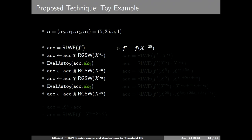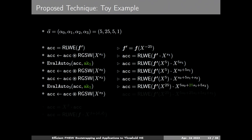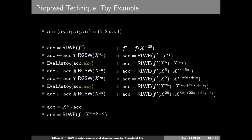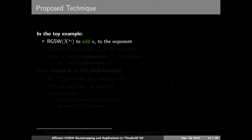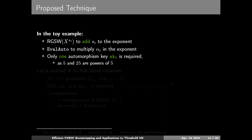Here is a toy example: alpha is given as 5, 25, 5, and 1. We have some initial ciphertext F-prime, then we multiply x^(s_i). Then we perform eval_auto by 5. Then we add s_0 and s_2 again using RGSW. Then we multiply by 5 again. We can see that s_0 and s_2 are multiplied by 5 and s_1 is multiplied by 25. Finally we add s_3 and the inner product is done in the exponent, and we perform x^Beta — the decryption is done. We only need one automorphism key AK(5), because 1, 5, and 25 are all powers of 5.